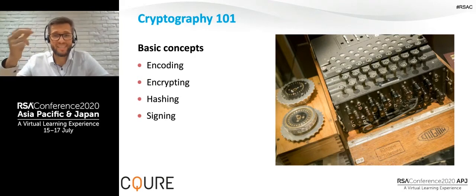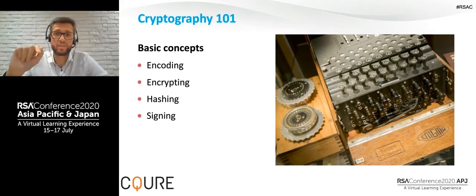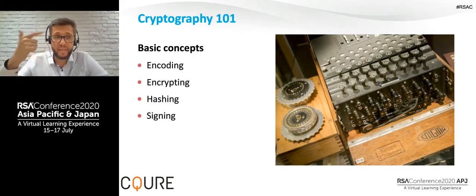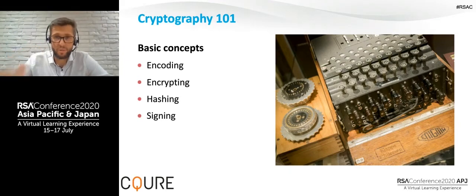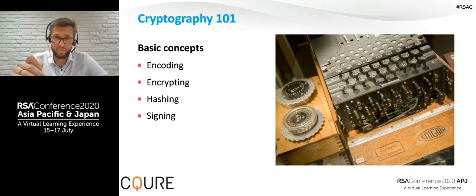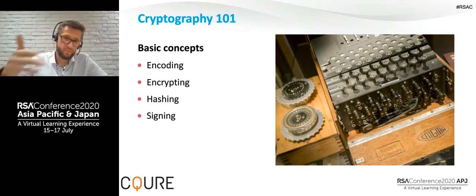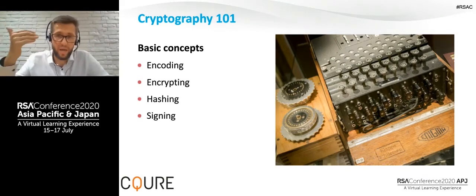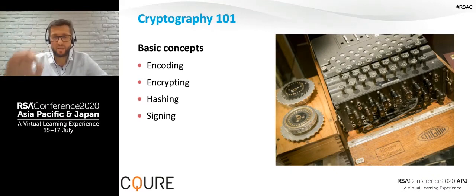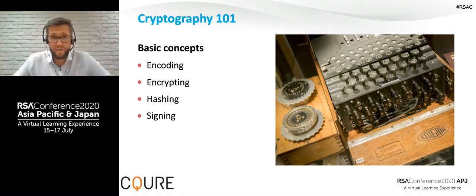With RSA, when you encrypt with the first key, the second is used for decryption, and vice versa. We can make one of those keys public and keep the other completely private, stored securely. This is the foundation of asymmetric cryptography.